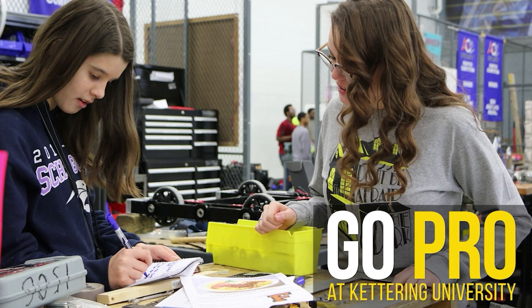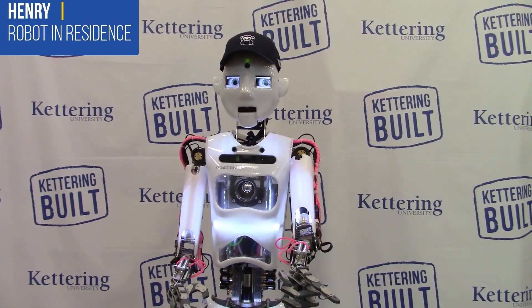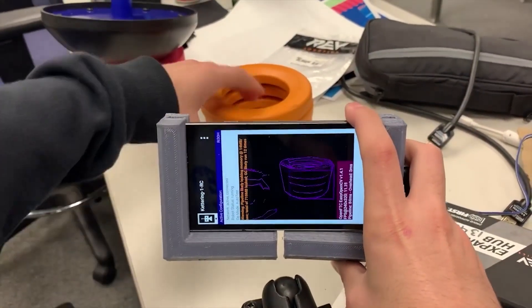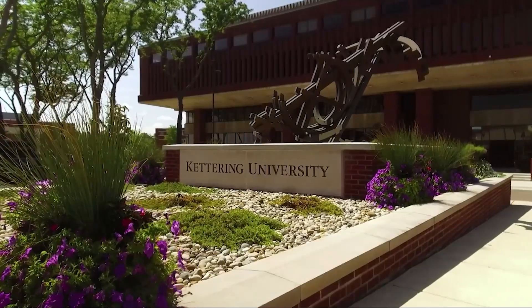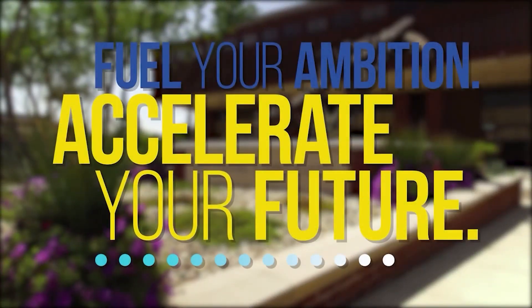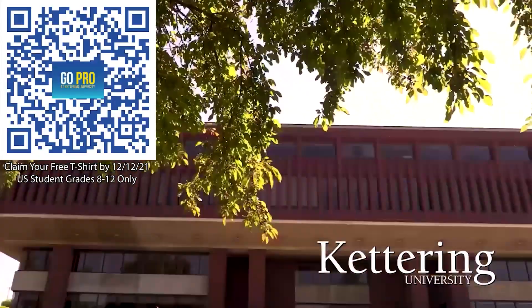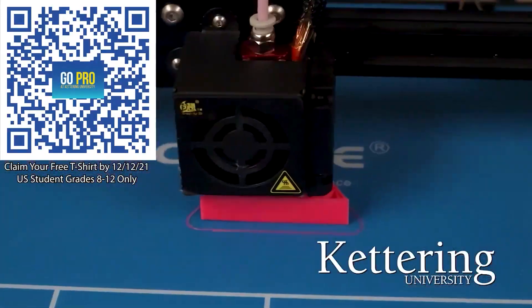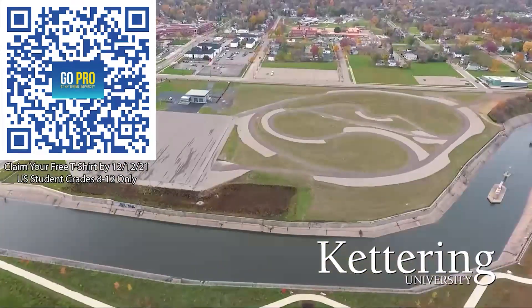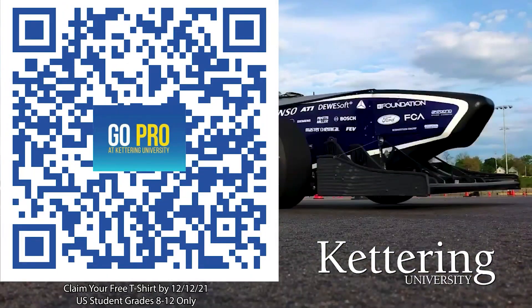We'd also like to thank Kettering University. Kettering University is where robotics students come for their education. Over 30 percent of those who attend Kettering University were in high school robotics and you can keep going with their BattleBots, VexU, Esports and First Mentorship programs. If you are a U.S. student grades 8-12, scan the QR code to stay up to date on info and events happening at Kettering and get a free Kettering t-shirt when you sign up by December 12, 2021.